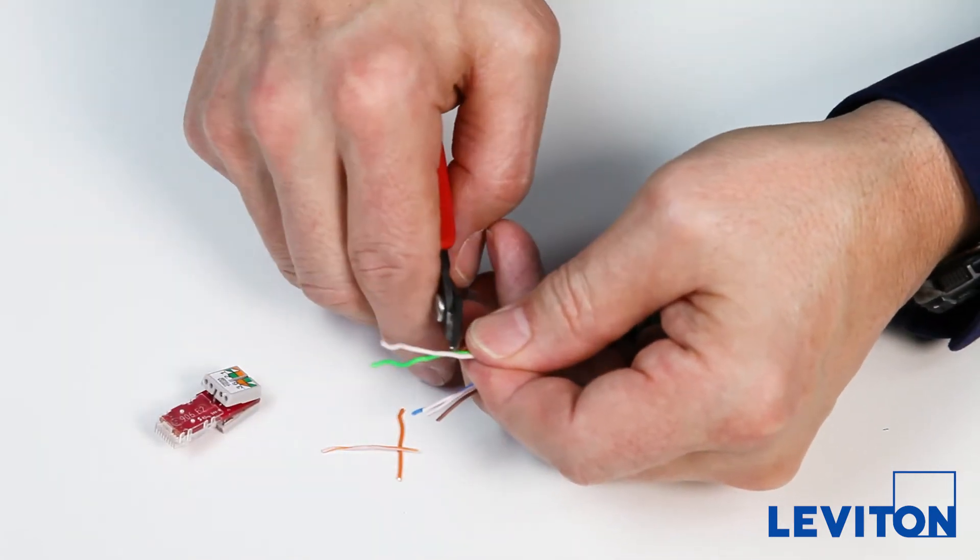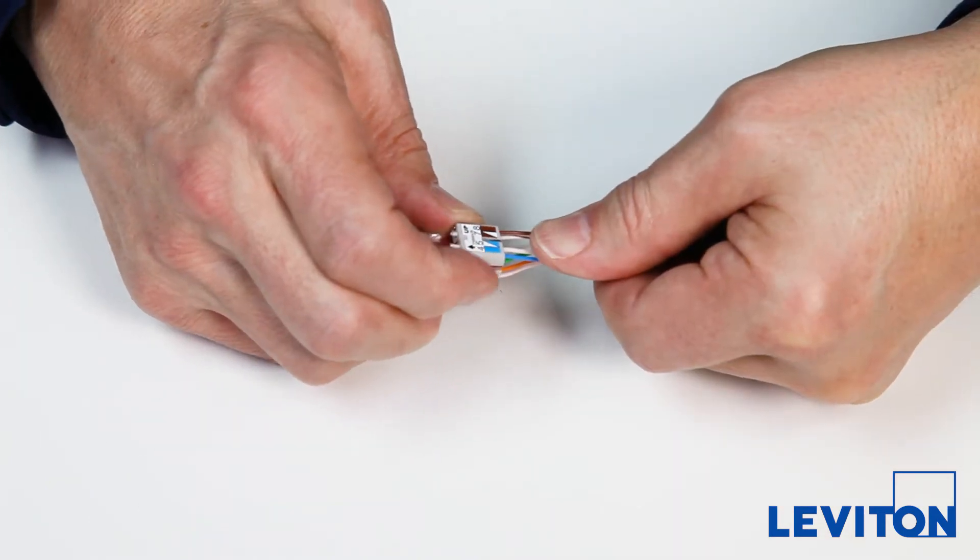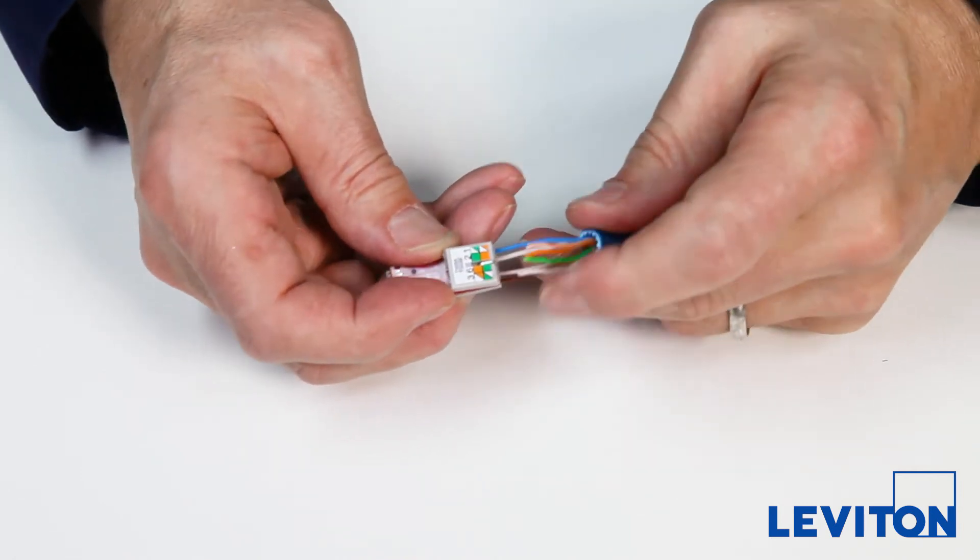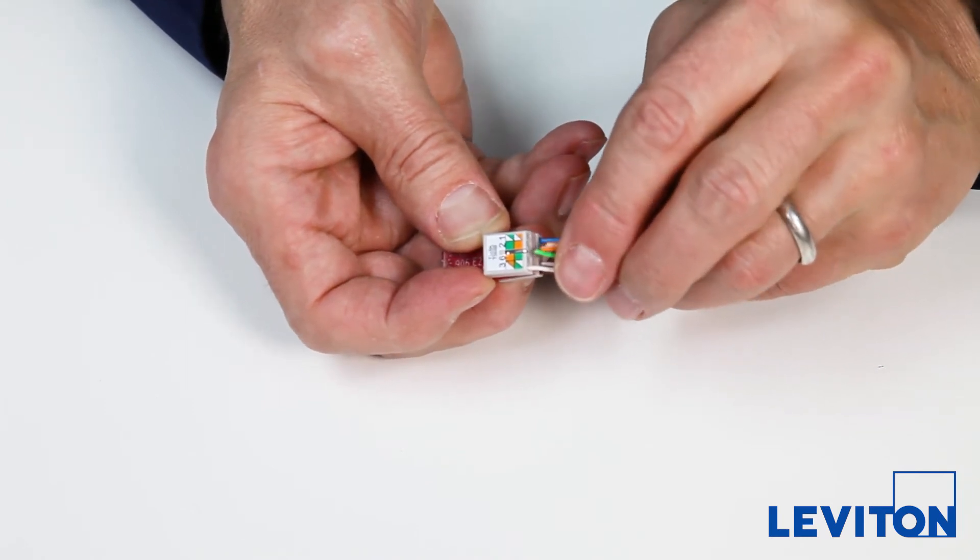Thread the blue and brown wire pairs through the appropriate holes, following the diagram on the label. Flip the wire manager over and thread the green and orange pairs.